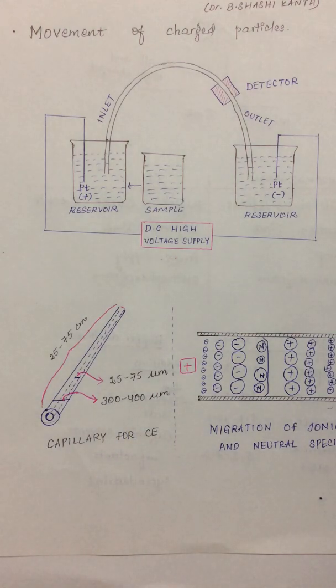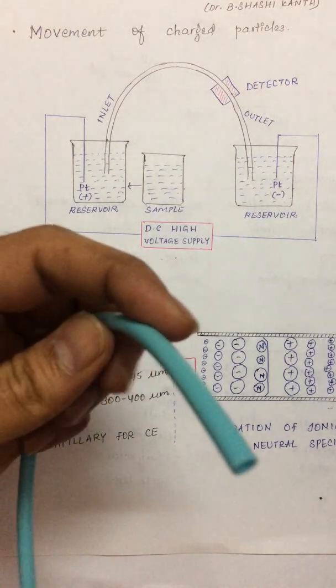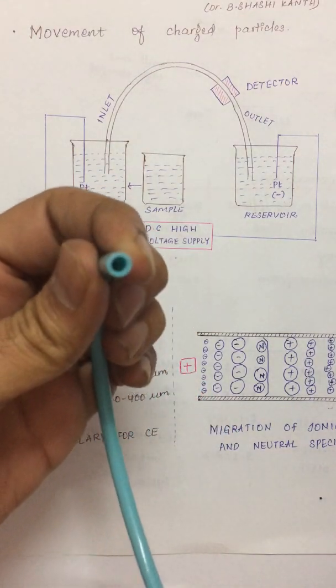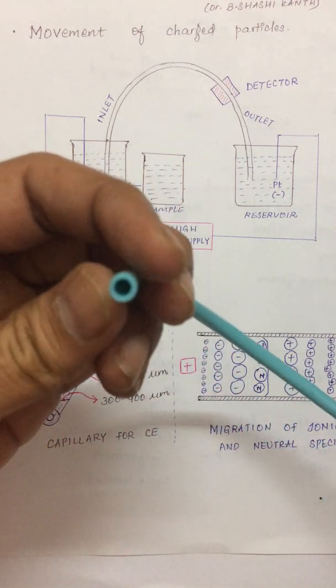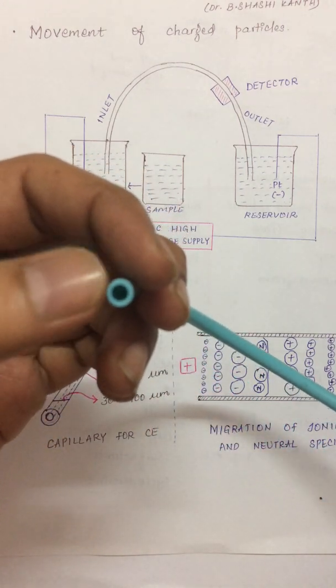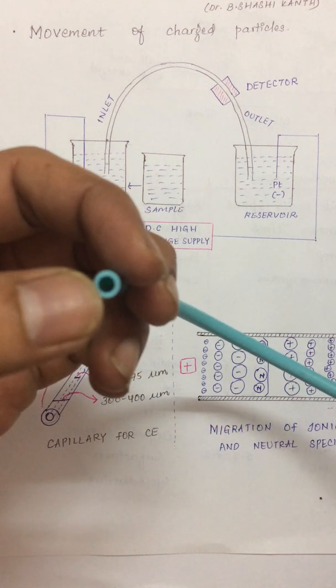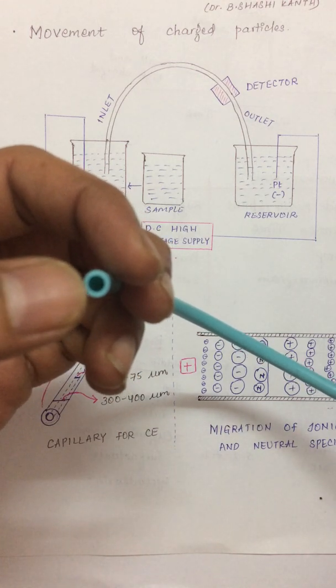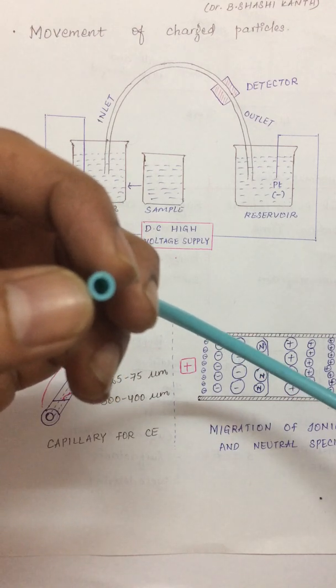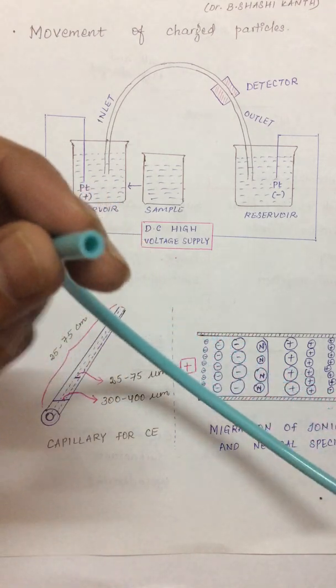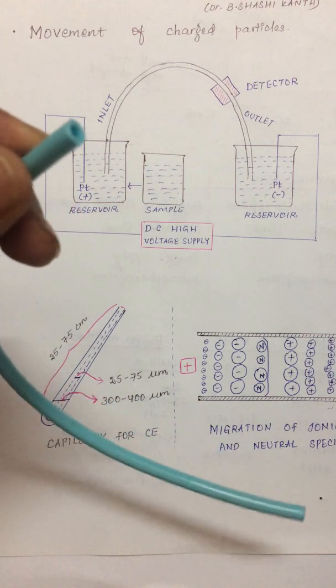Here we can see, suppose if I am holding a capillary, this is only a model. We can see the outer diameter and also an inner diameter. The inner diameter is more important. Usually for these capillaries it is like a hair thickness through which the buffer solution or the analyte has to enter.